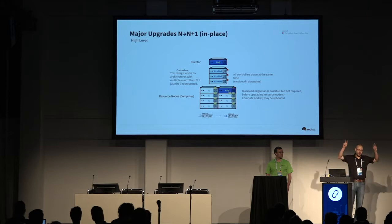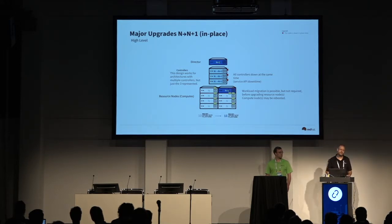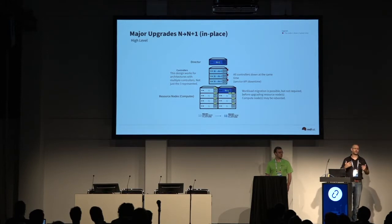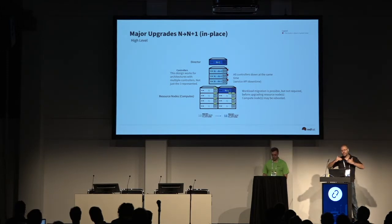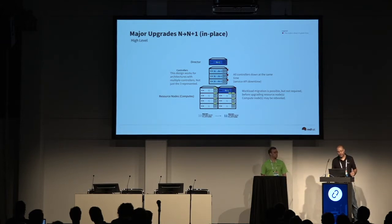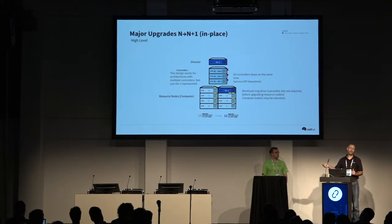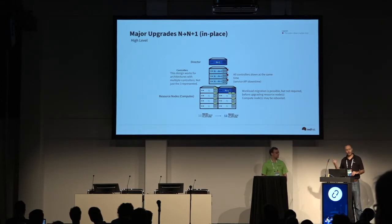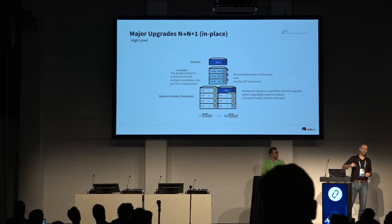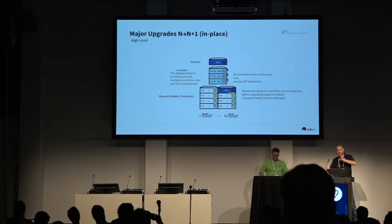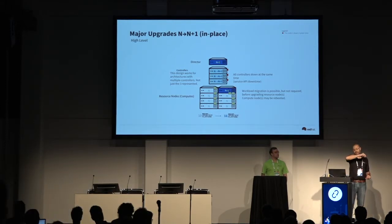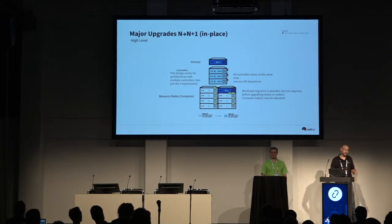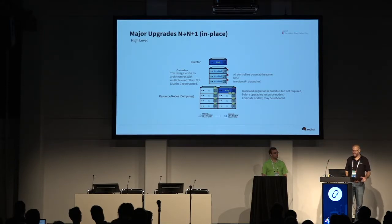For the fast-train customers going release by release, we have what we call major upgrades, version-to-version upgrades, or N plus one. This feature has been in Red Hat OpenStack Platform since version 8, the Liberty release. We provide the ability to do an in-place, minimally disruptive upgrade from Kilo to Liberty and all the way through Queens and soon Rocky.